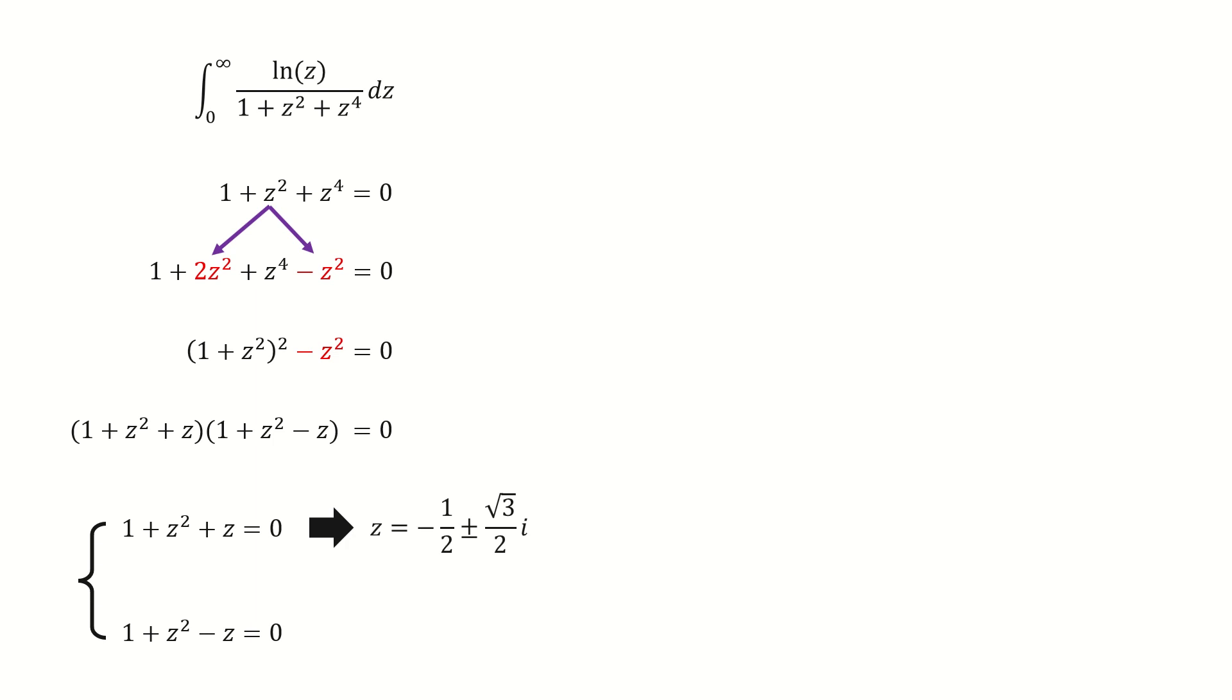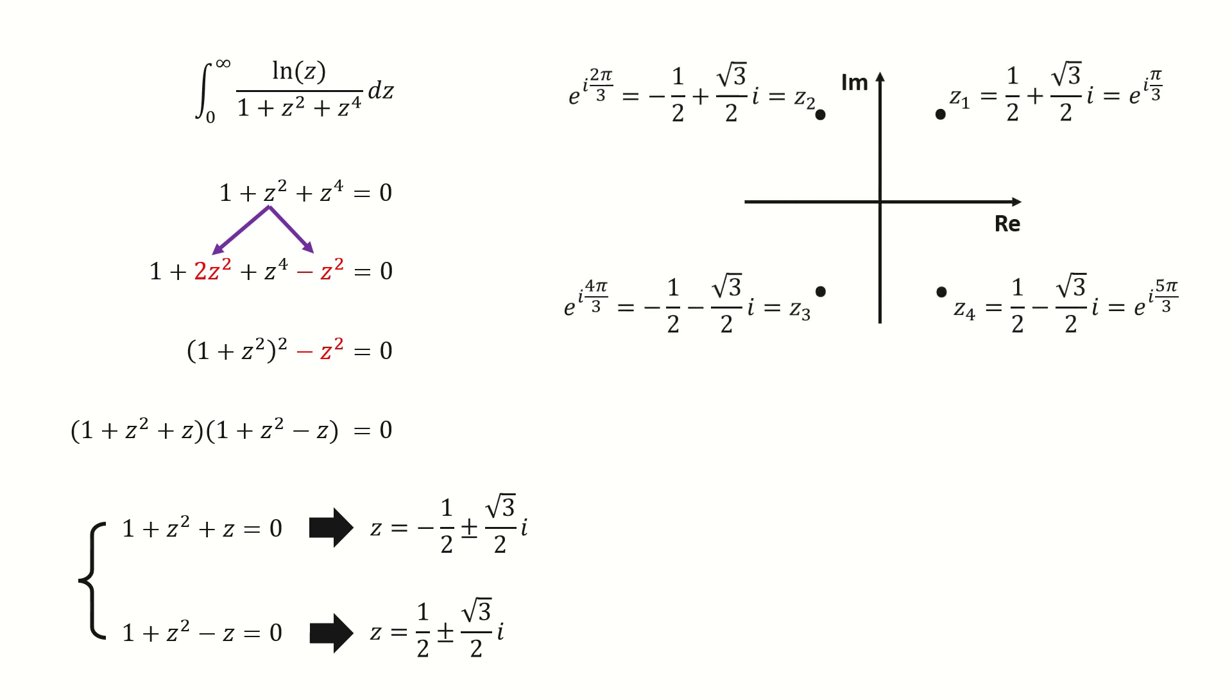So we got two equations. From the top equation, we can get two complex roots for z. And from the bottom equation, we can get another two complex roots. And next, we mark these four roots on the complex plane. So for the denominator, we can factorize it into this form.